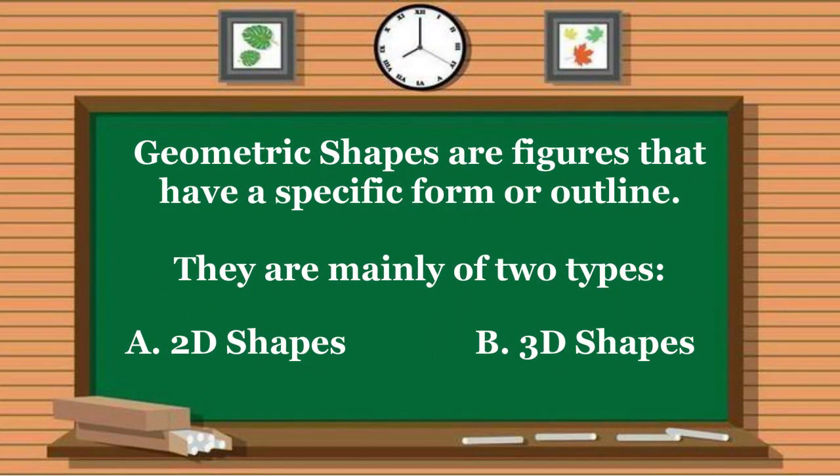Geometric shapes are figures that have a specific form or outline. They are mainly of two types: A. 2D shapes, and B. 3D shapes.